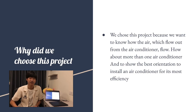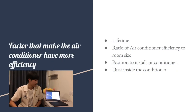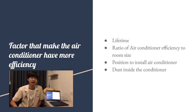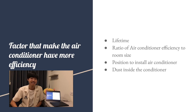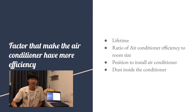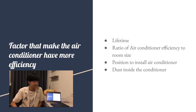The factors that affect air conditioner efficiency are: first, the lifetime of the air conditioner machine; second, the ratio of the air conditioner size compared to the room size — whether it is bigger or smaller — to achieve a cooler temperature; third, pollution during installation; and last, dust inside the air conditioner.